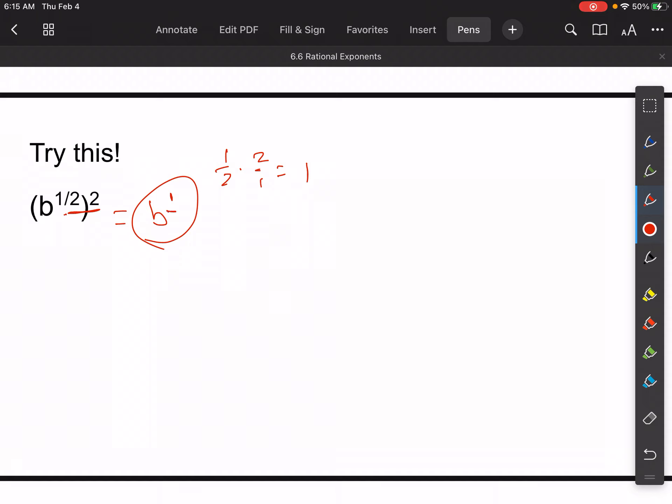So what that's teaching me is that that half power is actually acting like a root. So this is the same thing as the square root of b.